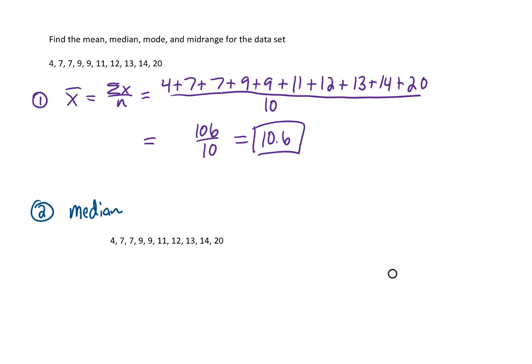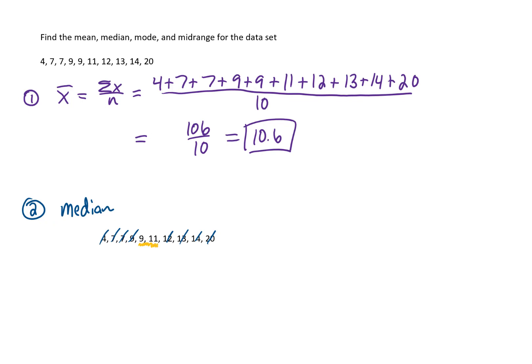If we want our median, notice first that our data set is ordered from smallest to largest. We can start crossing off values on the outside, working towards the middle value of this data set. You'll notice that there are actually two values in the middle. When this happens, we take the average of those two values — that means 9 plus 11 divided by 2, which is 10.